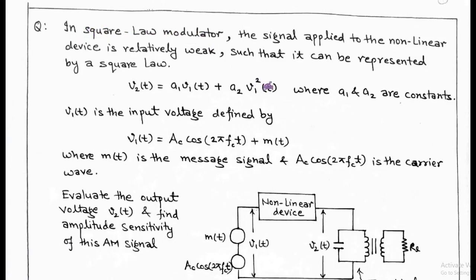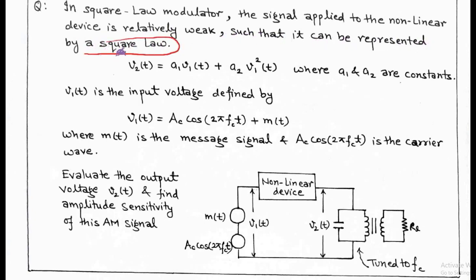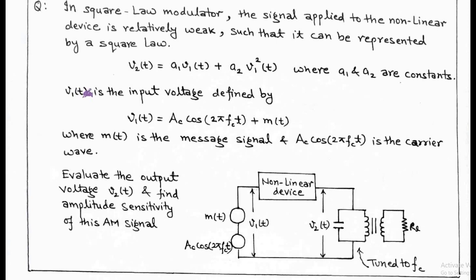The question is: in the square law modulator shown in the figure, the signal applied to the non-linear device is relatively weak, such that it can be represented by a square law. That is, v2(t) = a1·v1(t) + a2·v1²(t), where a1 and a2 are constants. Here, v1(t) is the input voltage defined as Ac·cos(2π·fc·t) + m(t), where m(t) is the message signal and Ac·cos(2π·fc·t) is the carrier wave.